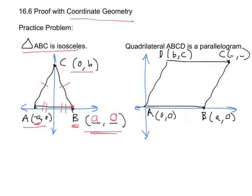For our second problem, we have quadrilateral ABCD and it's a parallelogram, which means this side is parallel to this side, and this side is parallel to this side, and they're also congruent in those pairs. We're given A at (0, 0), B at (a, 0), and D at (b, c), and we need to find the coordinates of C.